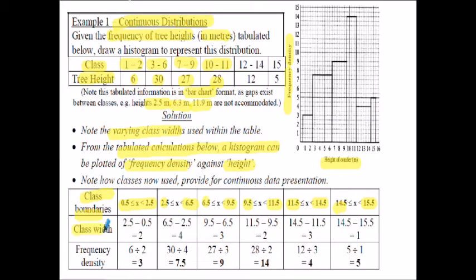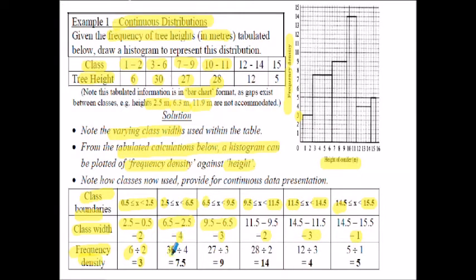When you work out the class widths: 2.5 take away 0.5 is 2, 6.5 take away 2.5 is 4, 9.5 take away 6.5 is 3, and so on - class widths of 2, 4, 3, 2, 3, and 1 at the end. To work out the frequency density for the vertical axis, I divide the frequency by the class width to get the height. So 6 divided by 2 gives 3. For the next category, 30 divided by the class width of 4 gives a frequency density of 7.5. For the next category, 27 divided by the class width of 3 gives 9. And so it goes on for all the other frequency density calculations.